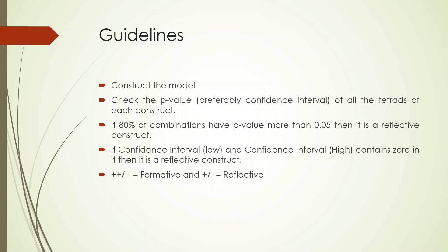You construct the model and check the p-value of all tetrads. If eighty percent of the combinations have a p-value more than 0.05, it is an indication that it is a reflective construct. In other words: plus-plus and minus-minus indicates formative; plus-minus indicates reflective. We will see this when we carry out the analysis.